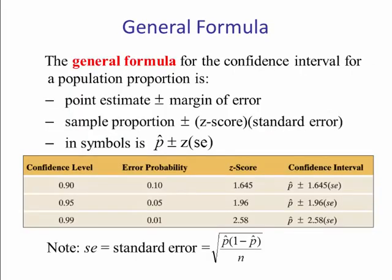So the general form for a confidence interval for a population proportion is point estimate plus or minus margin of error, which is the same thing as our sample proportion plus or minus our critical z score times the standard error. And in symbols, that would be p-hat plus or minus z alpha over 2 times our standard error.